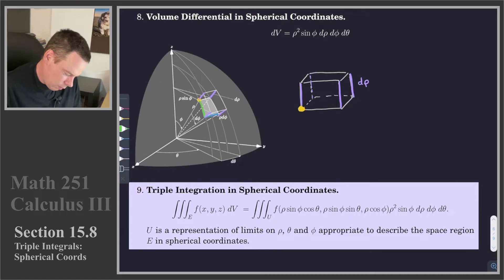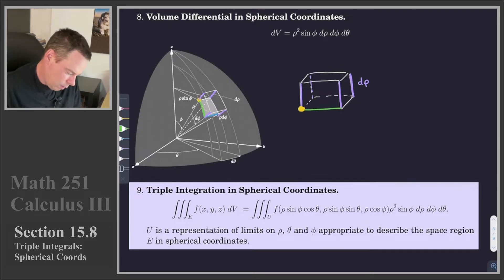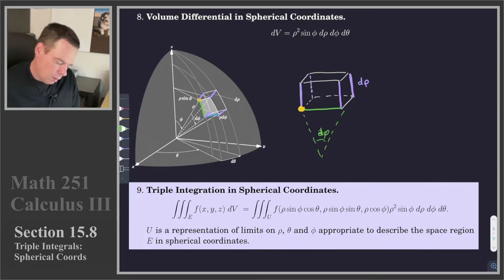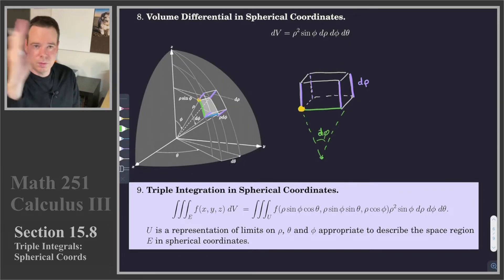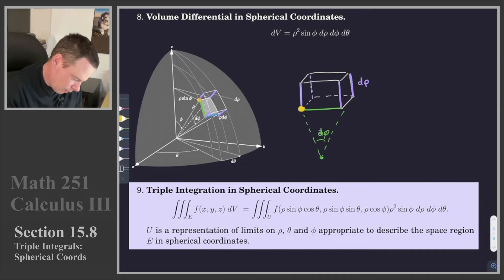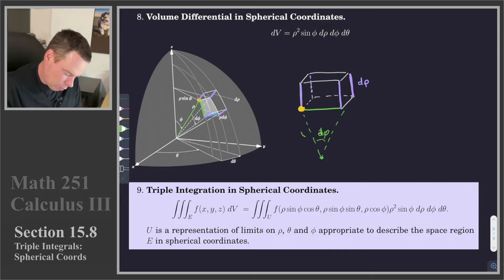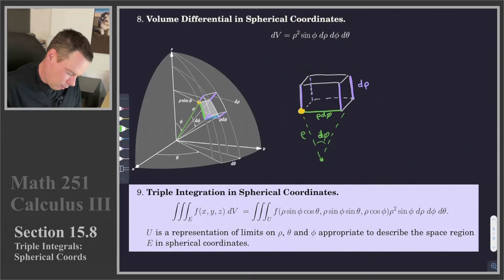As phi changes, we get this green distance in our picture. We've got to think about what that is — that's not dφ itself. dφ is the separation between the angles. What we need to know is the length. This dφ sweeps out a region; I need to know what the length is. The length that sweeps out that green line segment is the rho value that sweeps it out. So I have rho there and dφ, meaning this length is ρ dφ.